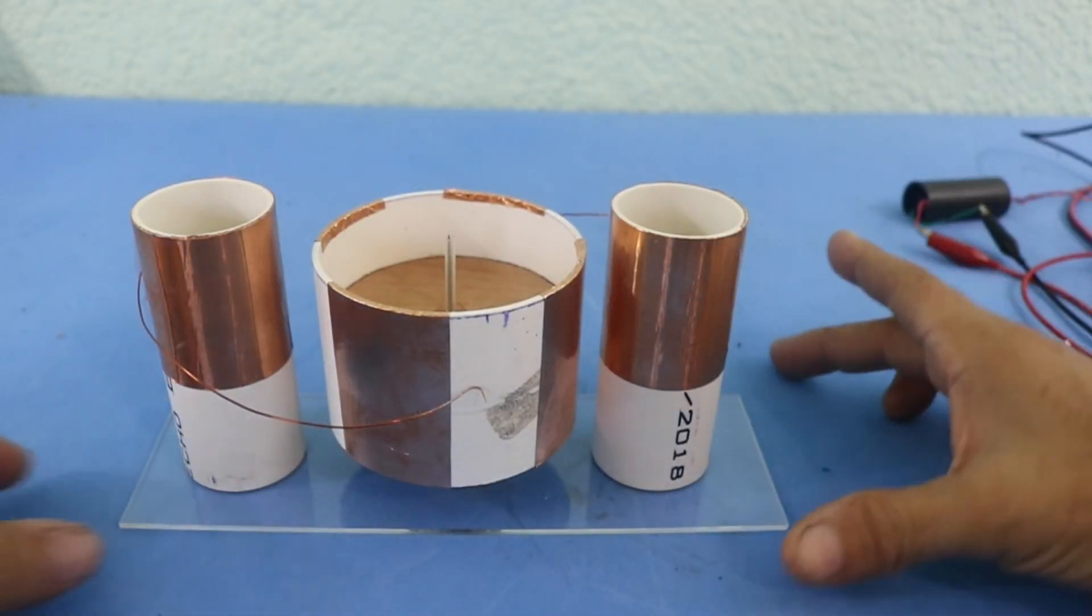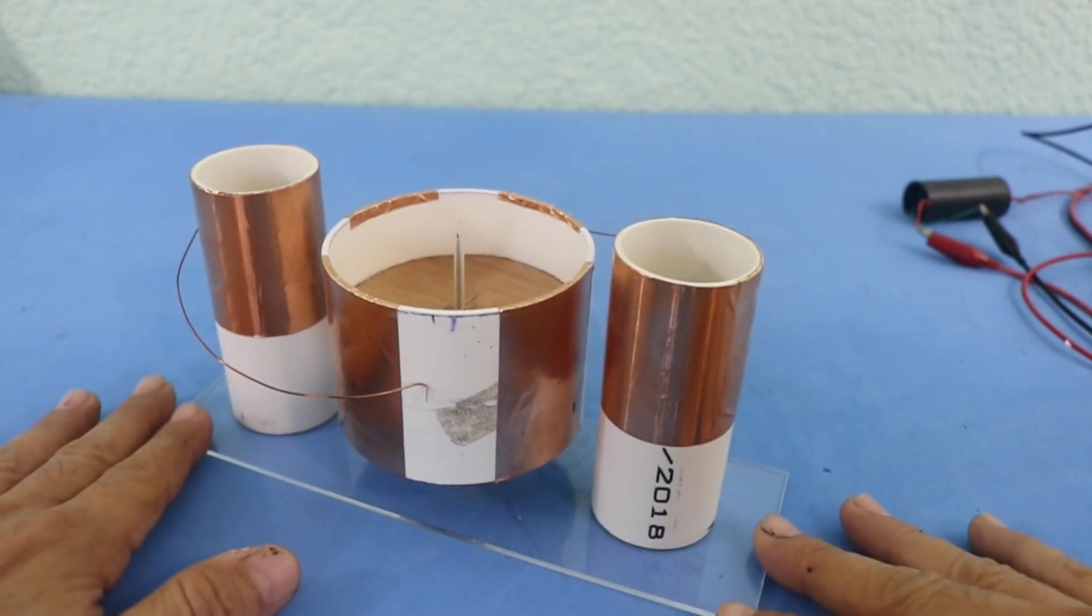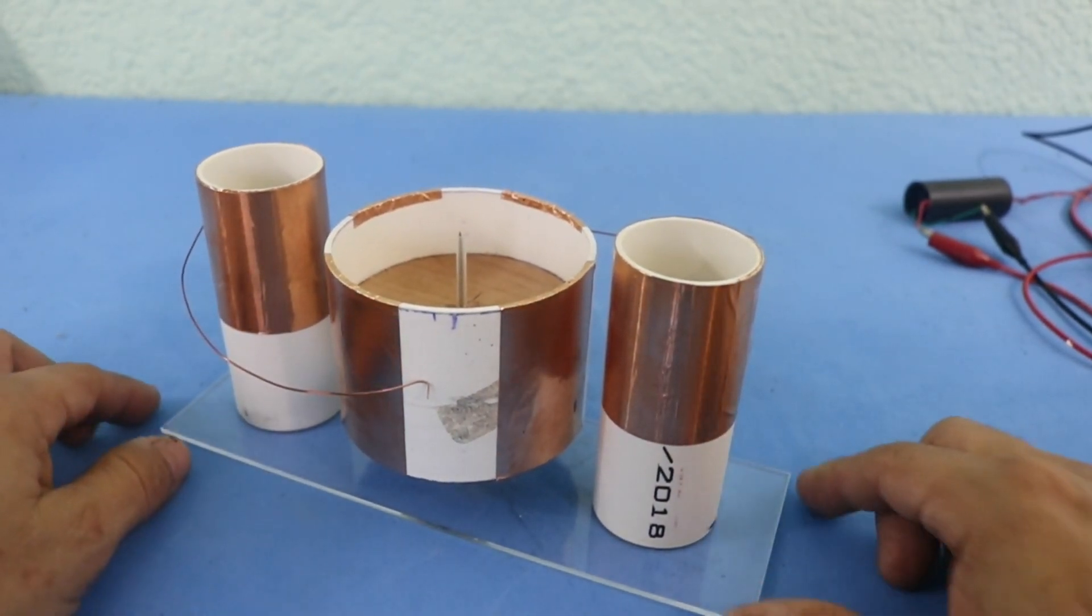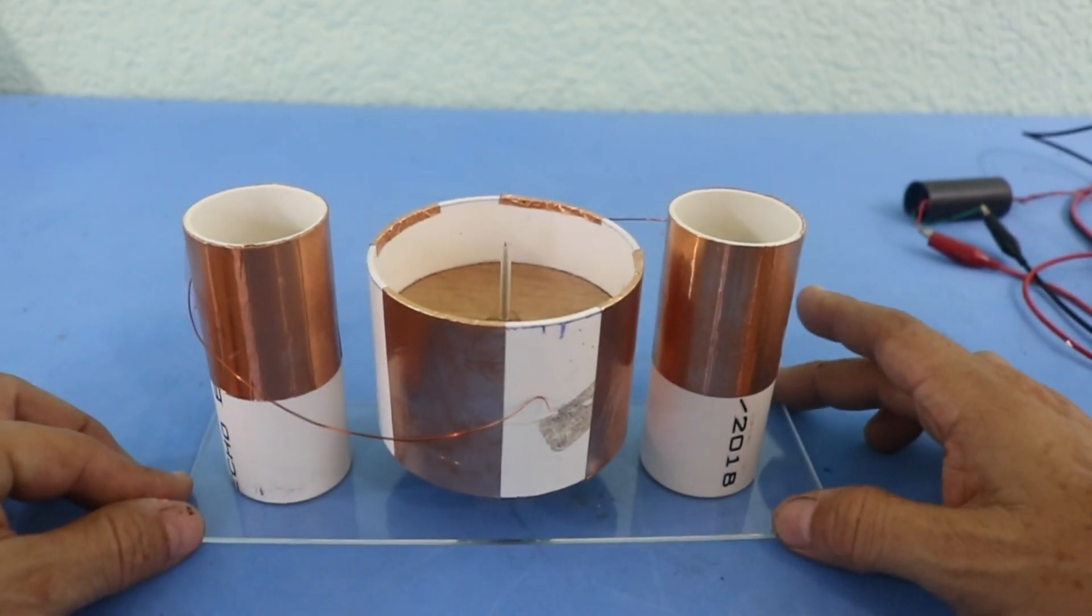So as you can see, it works pretty well at around 300 revolutions per minute. And how does the motor work? Well, the concept is simple.